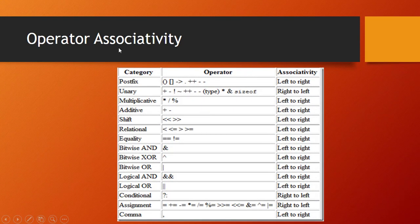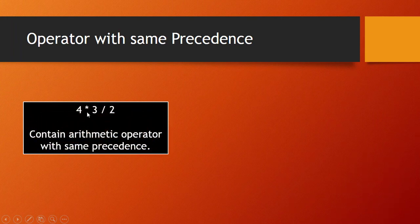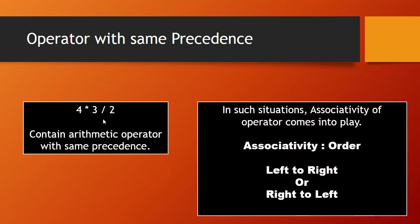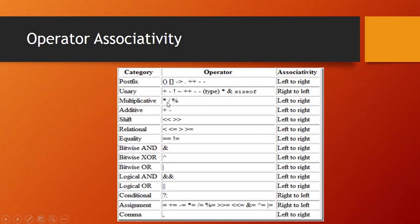This is the operator associativity chart, showing different types of operators and their associativity. Associativity means ranking the operators from left to right in an expression. In this case, we have a multiplication operator (star) and a division operator — both having the same precedence. In such situations we apply associativity, either from left to right or from right to left. Check the table: we have star and division, and we apply associativity left to right.